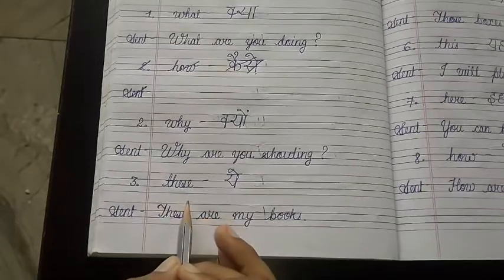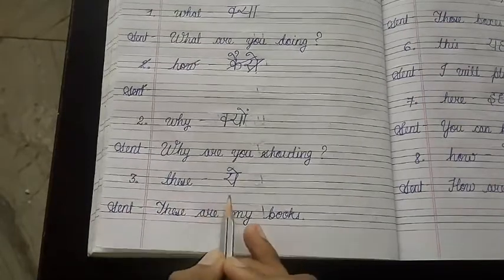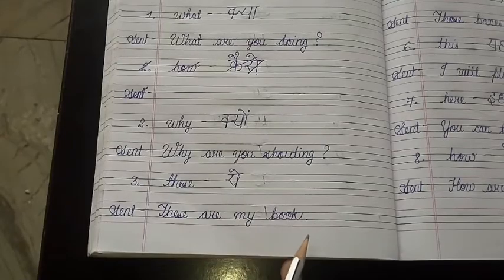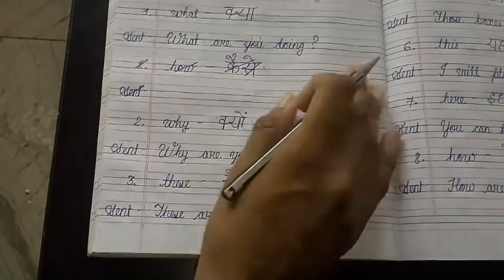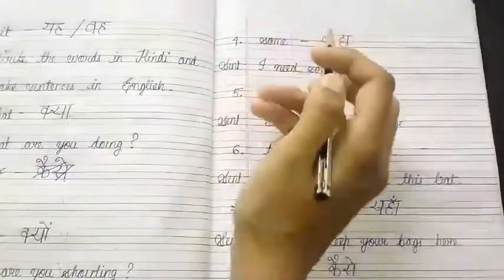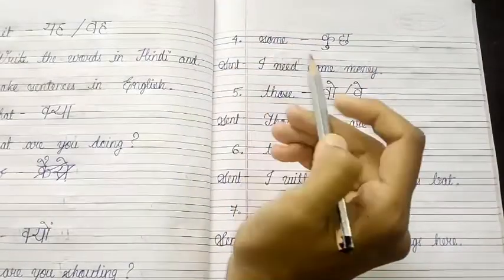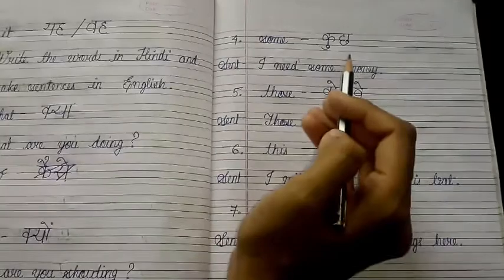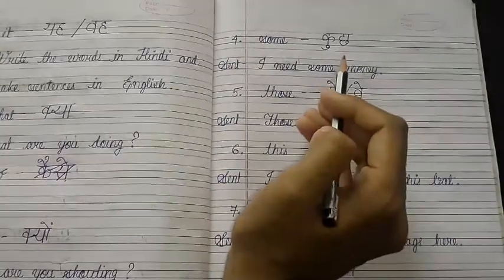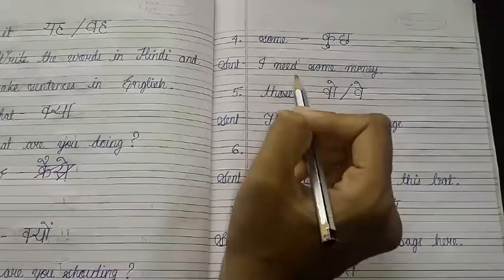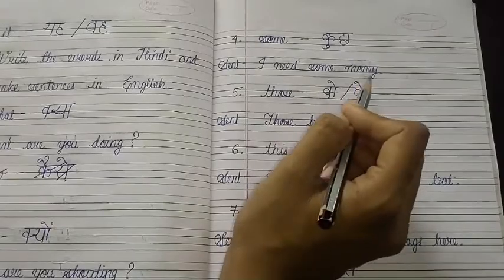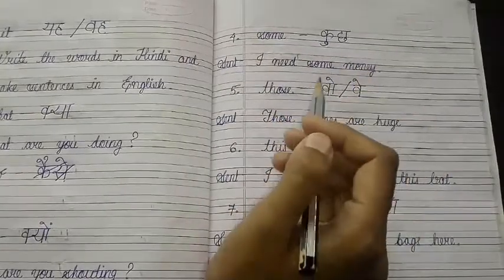Then comes number 3: 'these' — its Hindi translation is 'yeh'. The sentence is: These are my books. Next, number 4 is 'some' (s-o-m-e) — when translated into Hindi it becomes 'kuch'. The sentence is: I need some money — mujhe kuch paise chahiyen.